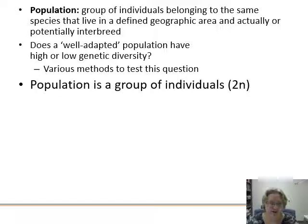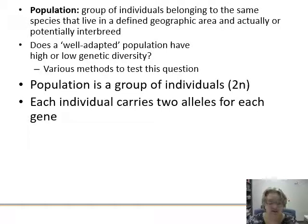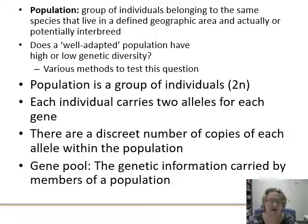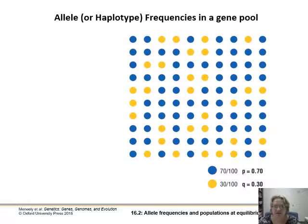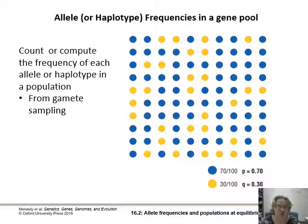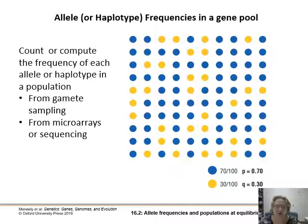So we've got our population — a group of two individuals, each individual carrying two alleles for each gene. There's a discrete number of copies of each allele within the population, and that is our gene pool: the genetic information carried by members of a population. These are our allele — this could also be haplotype, but we're not going to get too much into that — frequencies in a gene pool. You would count or compute the frequency of each allele in that population, maybe from gamete sampling — you could take eggs or sperm from an individual and sample those over time.